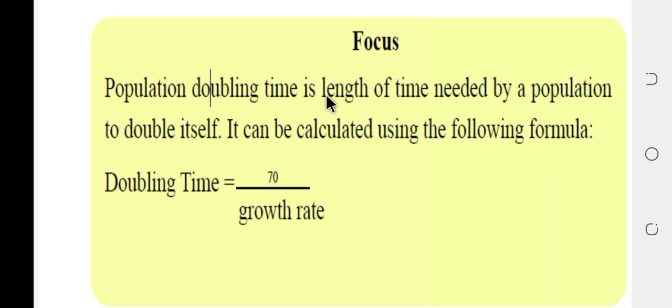Population doubling time is the length of time needed by the population to double itself. It can be calculated using the following formula: doubling time equals 70 divided by the growth rate.